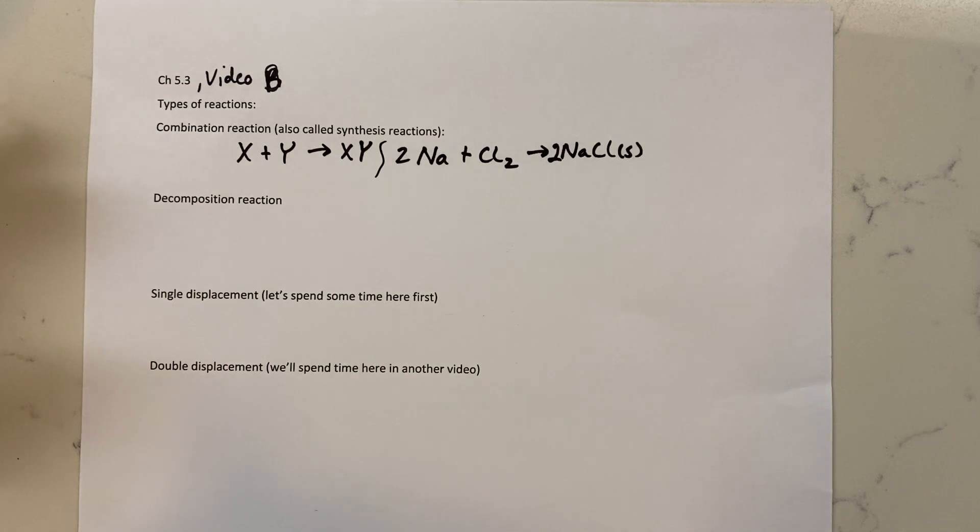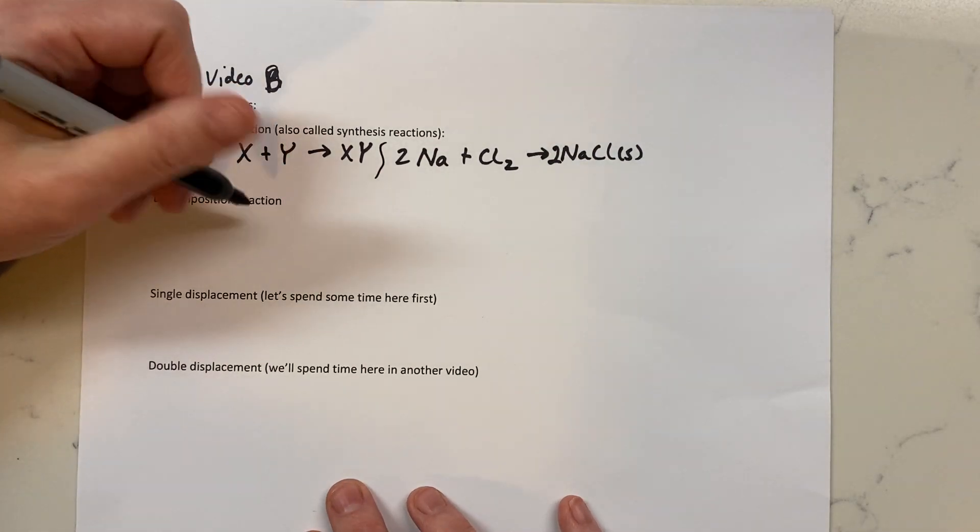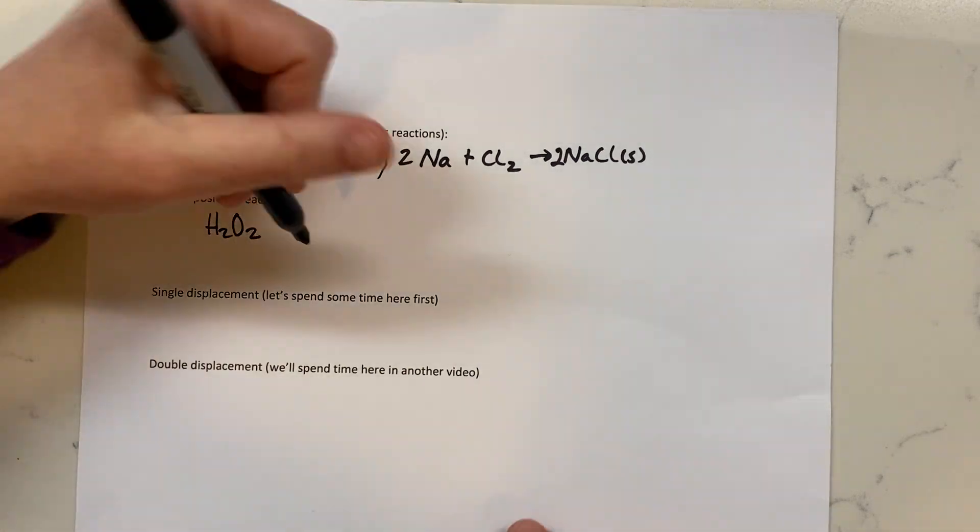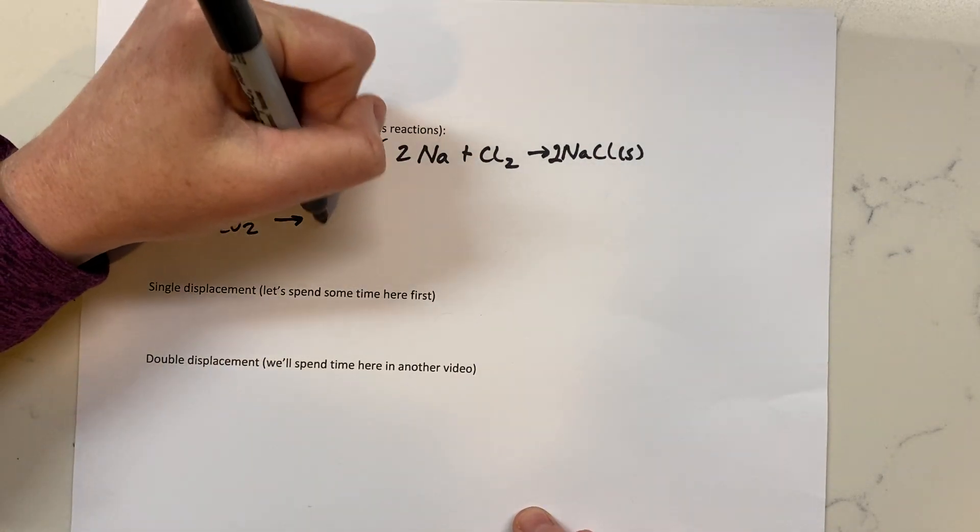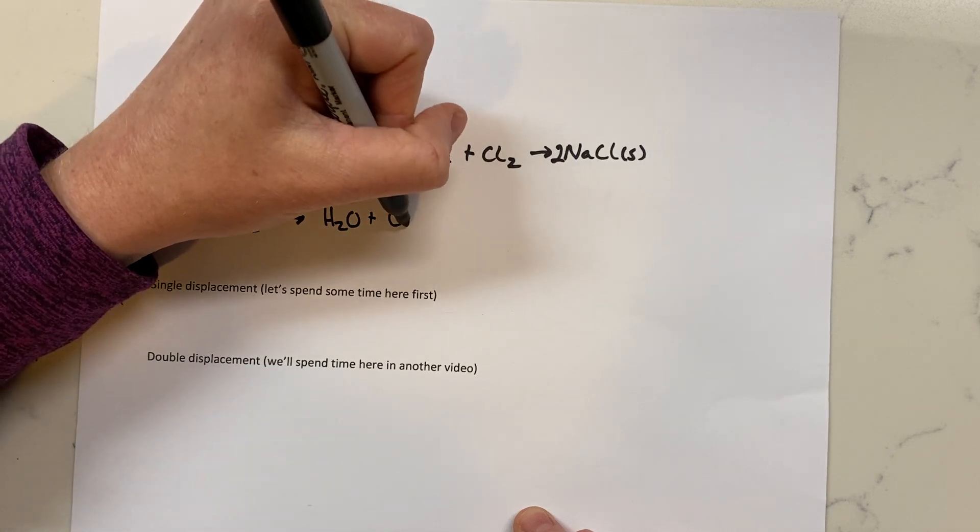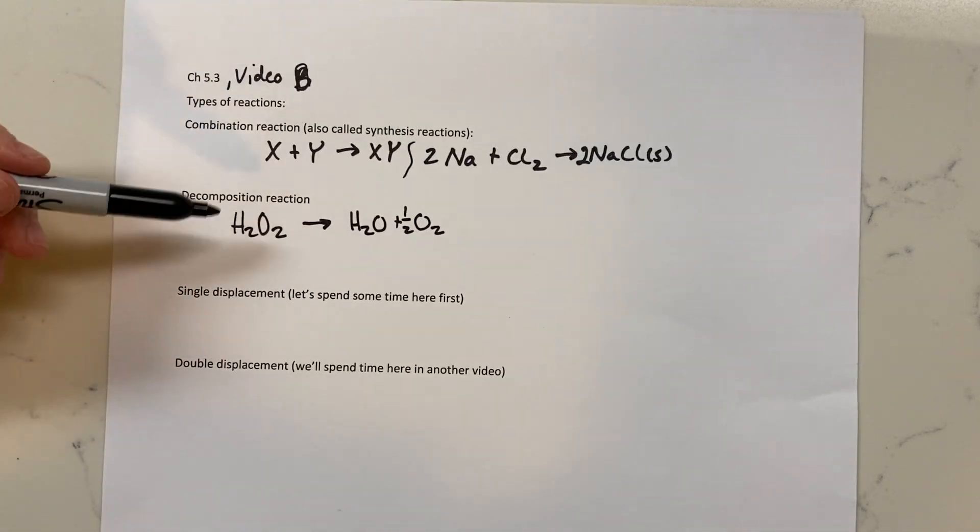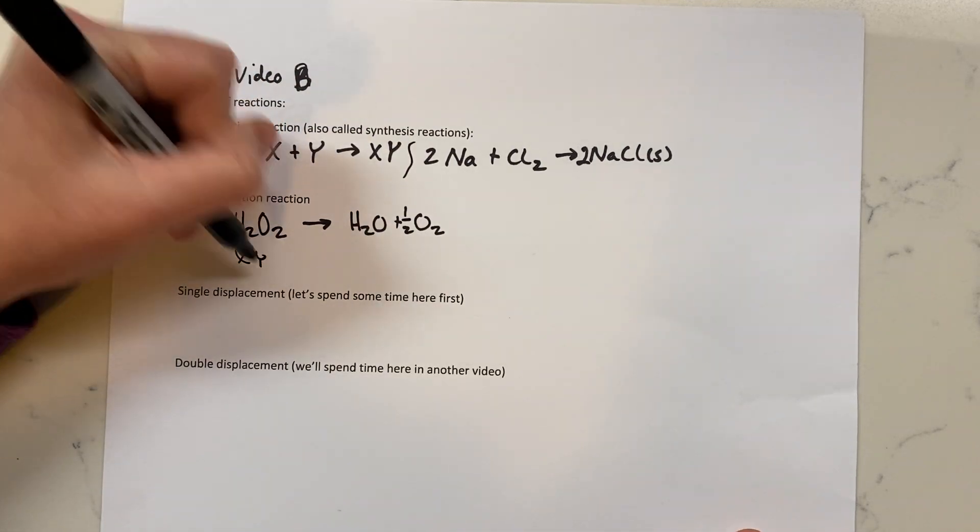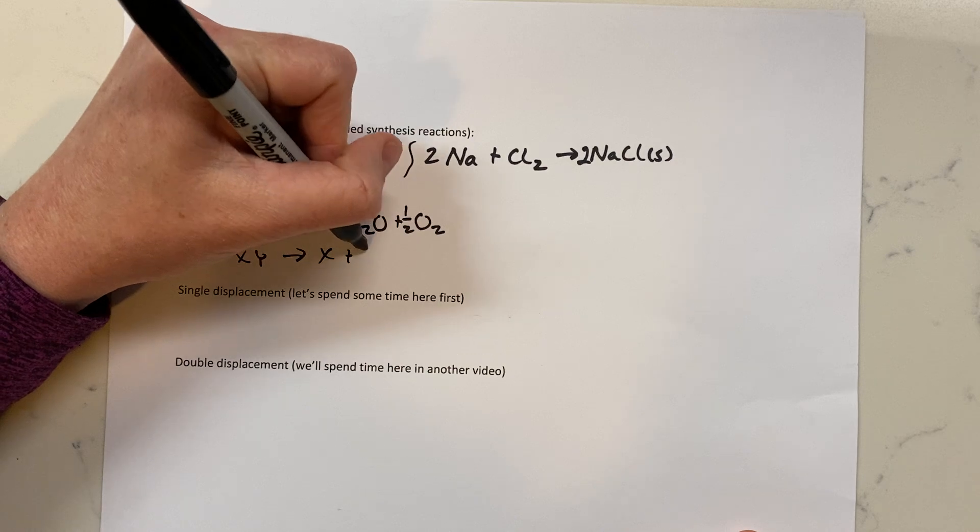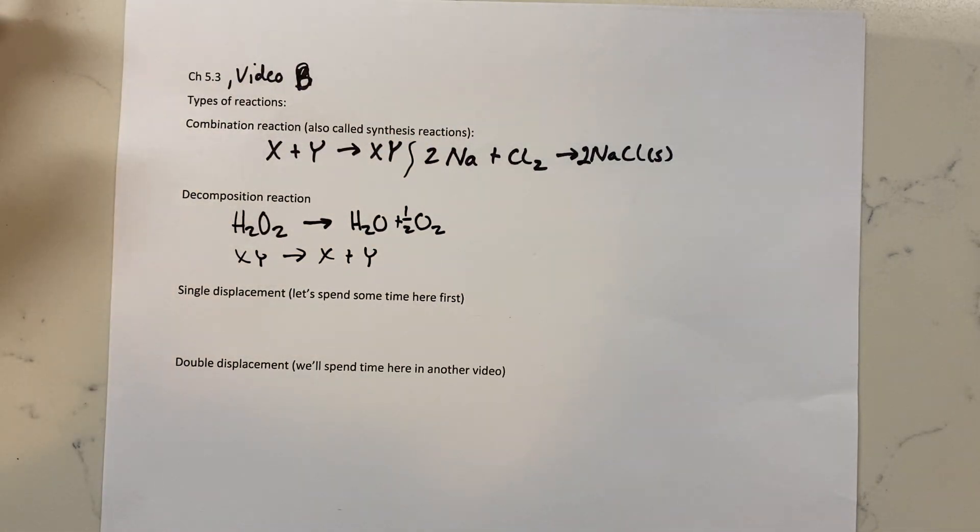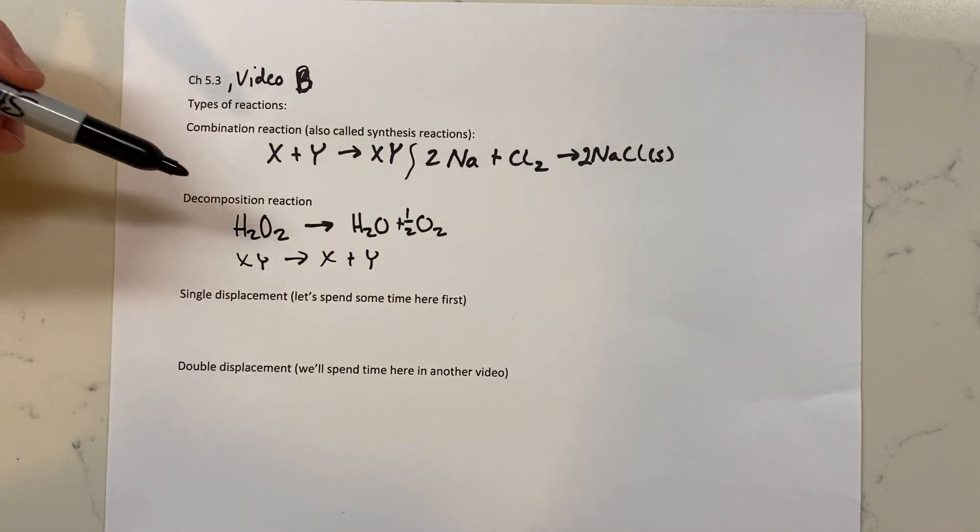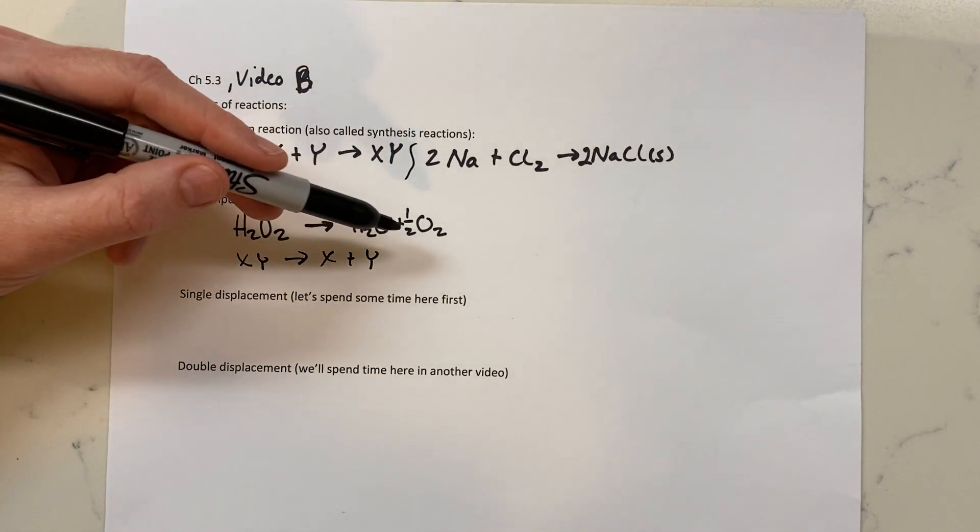A decomposition reaction would be kind of the opposite. An example would be if we took H2O2. If you leave hydrogen peroxide in your cabinet for too long, it'll actually start breaking down into water and oxygen gas. And we'll just use a half there to balance it out quickly. So kind of the opposite of a combination reaction would be a decomposition reaction.